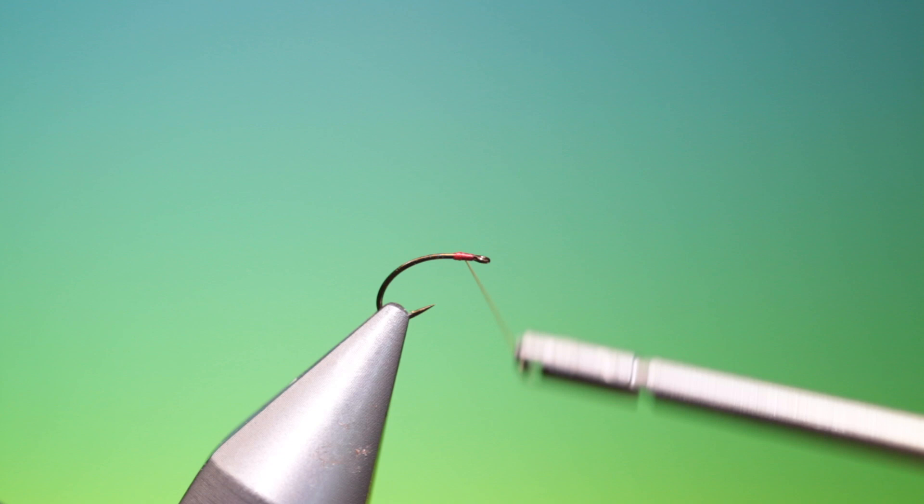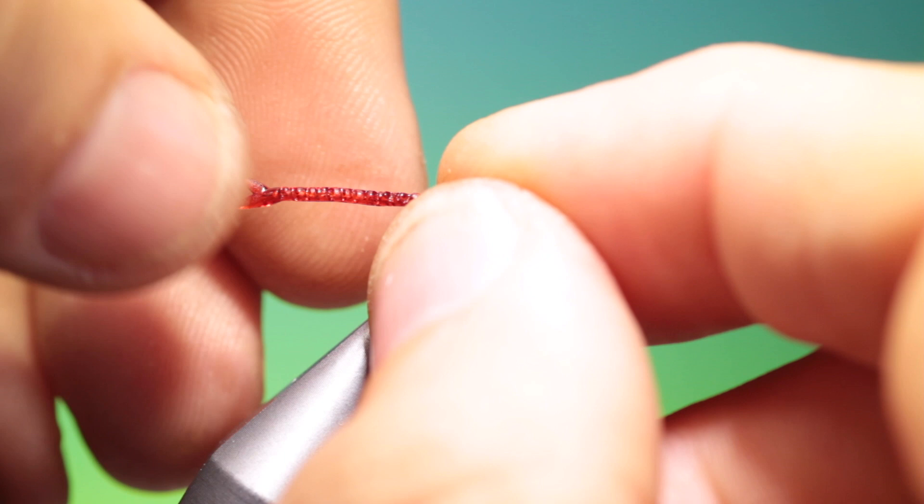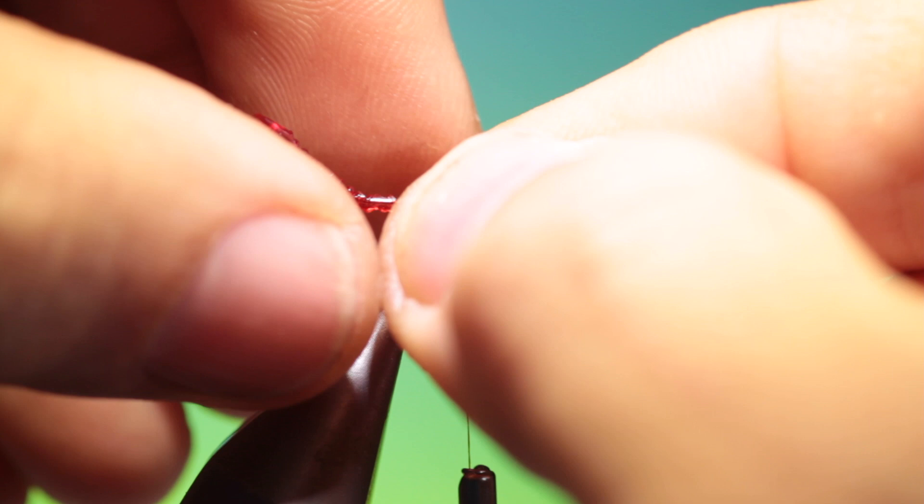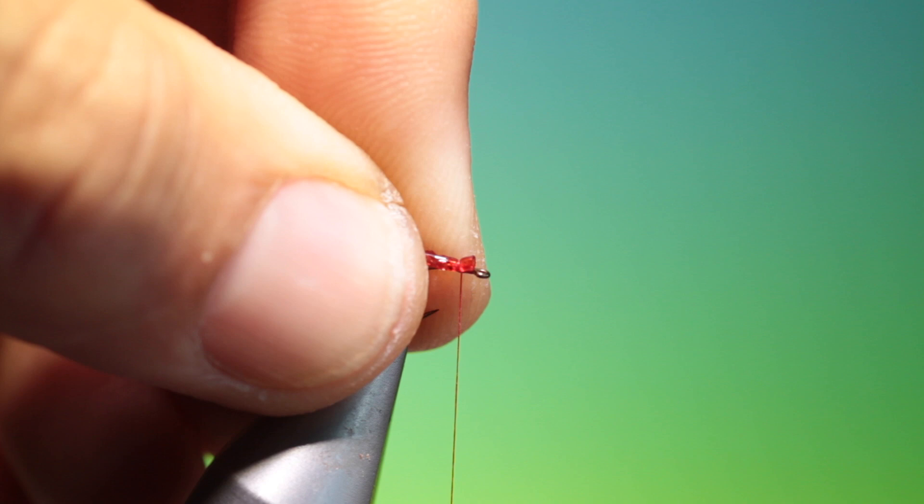Cut our body to the correct length. And then we want to find the correct position for the body, how we would like it to sit on the hook. That's good. So we'll just tack this in with a couple of turns and look at it. That looks good to me.